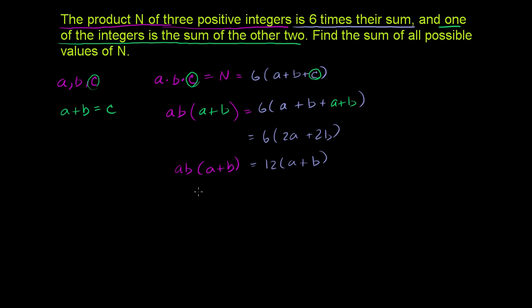So this is pretty interesting here. We can divide both sides by a plus b. We know that a plus b cannot be equal to 0, since all of these numbers have to be positive. If it was 0, dividing by 0 would give you an undefined answer. So if we divide both sides by a plus b, we get a times b is equal to 12.